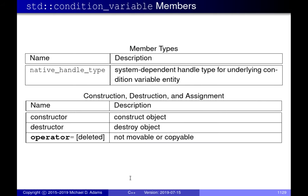Looking at the condition_variable class members in more detail: there's a native_handle_type member, similar to other types we've seen, which gives you a hook into the internal implementation — specifically the OS-specific condition variable type underneath. This gives you a handle to that underlying thing, but we won't use native handle types in this course. They're for more advanced usage where you want to take advantage of OS-specific features not available through the standard C++ API.